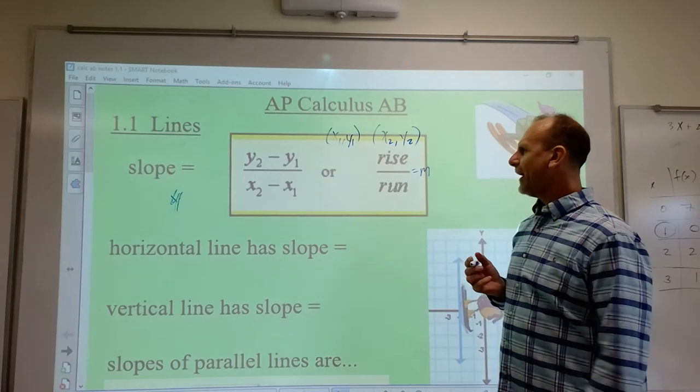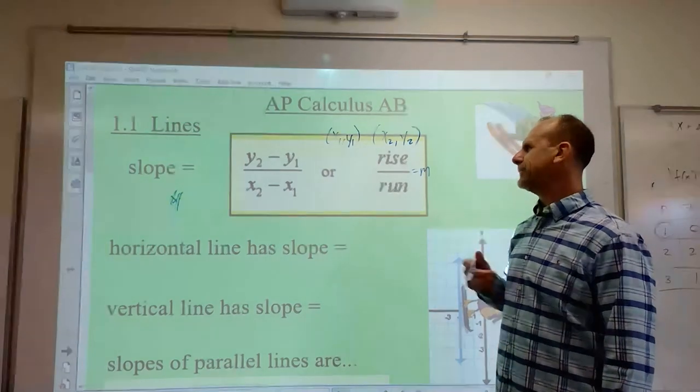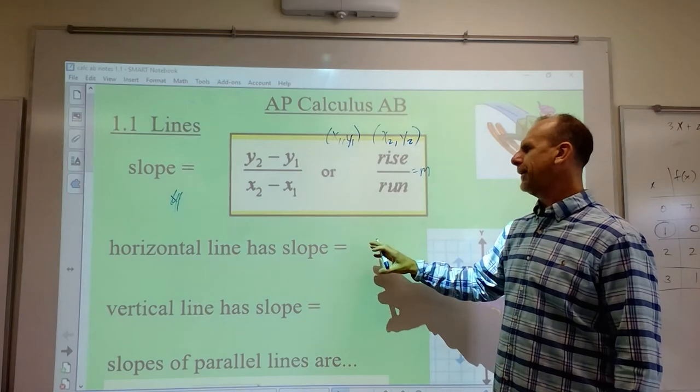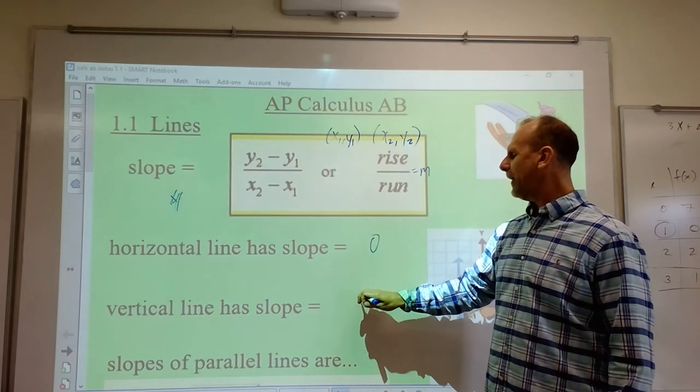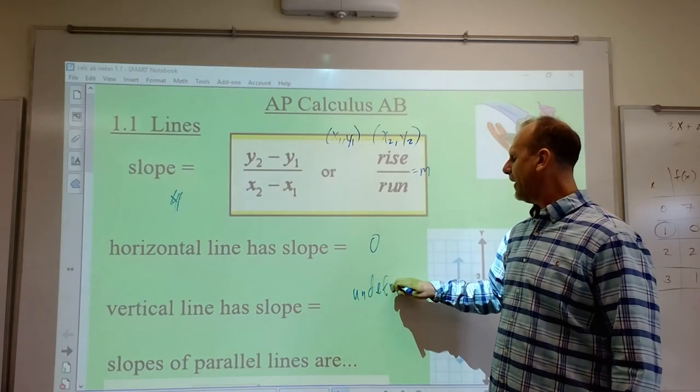Basically, you subtract them and it's rise over run. Horizontal lines have no slope - they have a slope of zero. Vertical lines have a slope that is undefined.